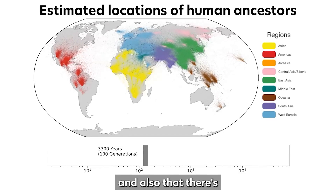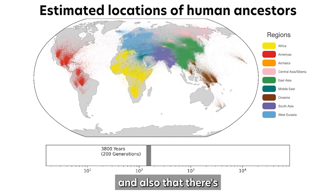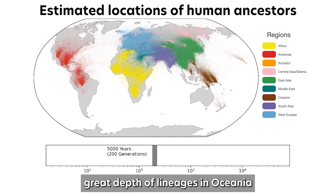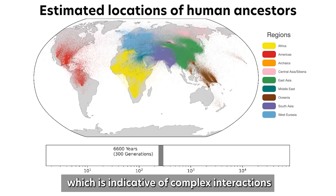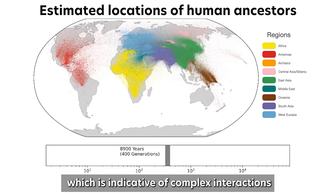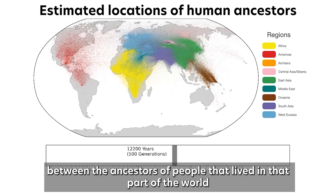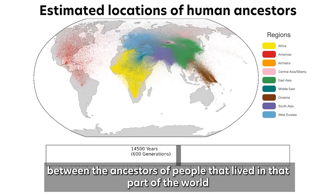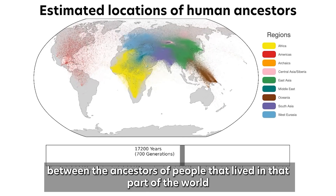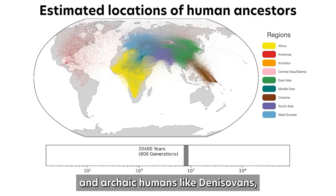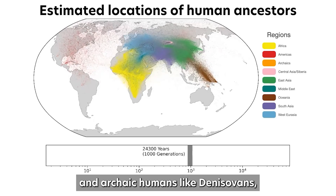There's also great depth of lineages in Oceania, which is indicative of complex interactions between the ancestors of people that lived in that part of the world and archaic humans like Denisovans, which we know of from sampling in Siberia.